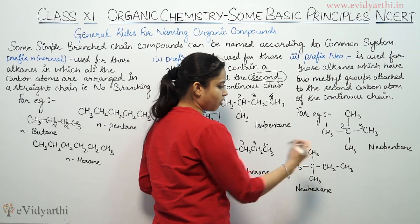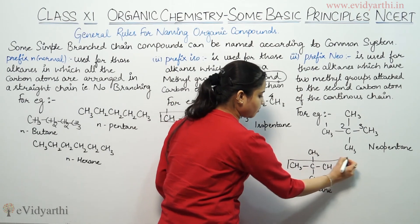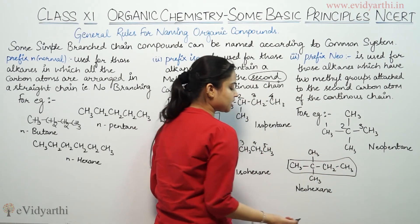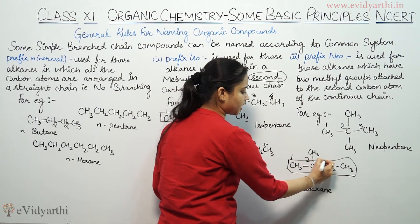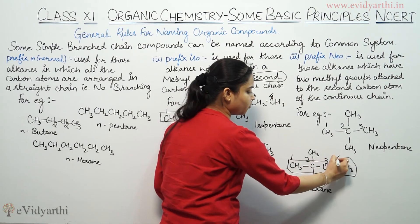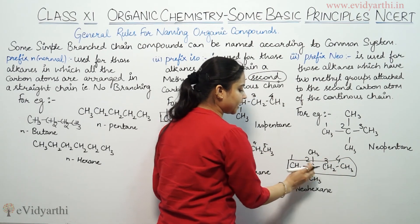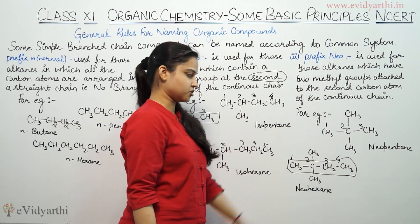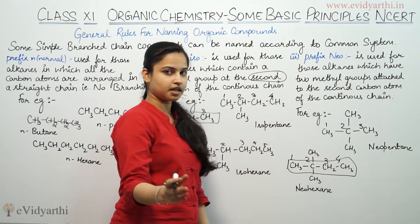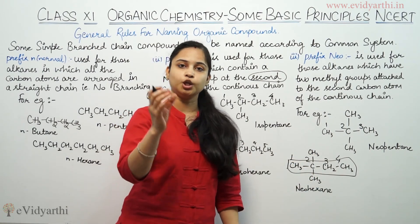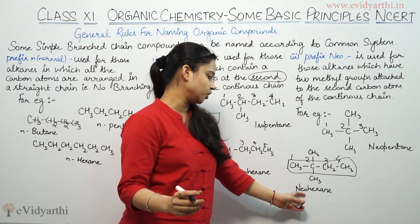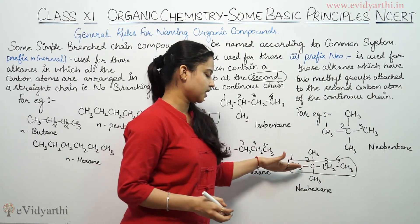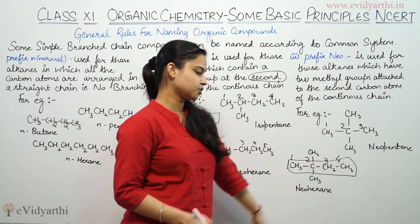Another example: you can see a long continuous chain — this is the second carbon, counting first, second, third, and fourth. At the second carbon, there are two methyl groups attached. So we use prefix NEO. Count the total number of atoms: four and five atoms, so it will be neo-hexane.